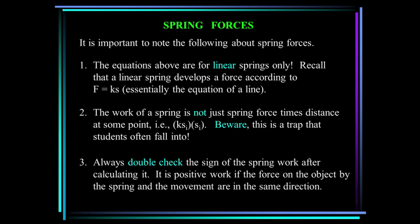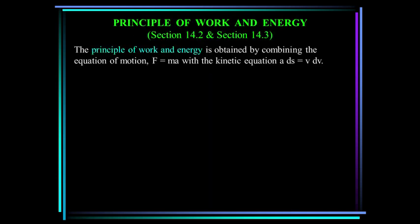Here are some important notes about spring forces. These equations are for linear springs only, so the force is K times S and the spring constant is constant. The work of a spring is not just the spring force times the distance at some point — this is a trap that students often fall into. Always double-check the sign of the spring work after calculating it. It is positive work if the force on the object by the spring and the movement are in the same direction. If I have stretched the spring initially to 1 meter and then stretch it to 2 meters, I have to put work into that, so the work is negative.